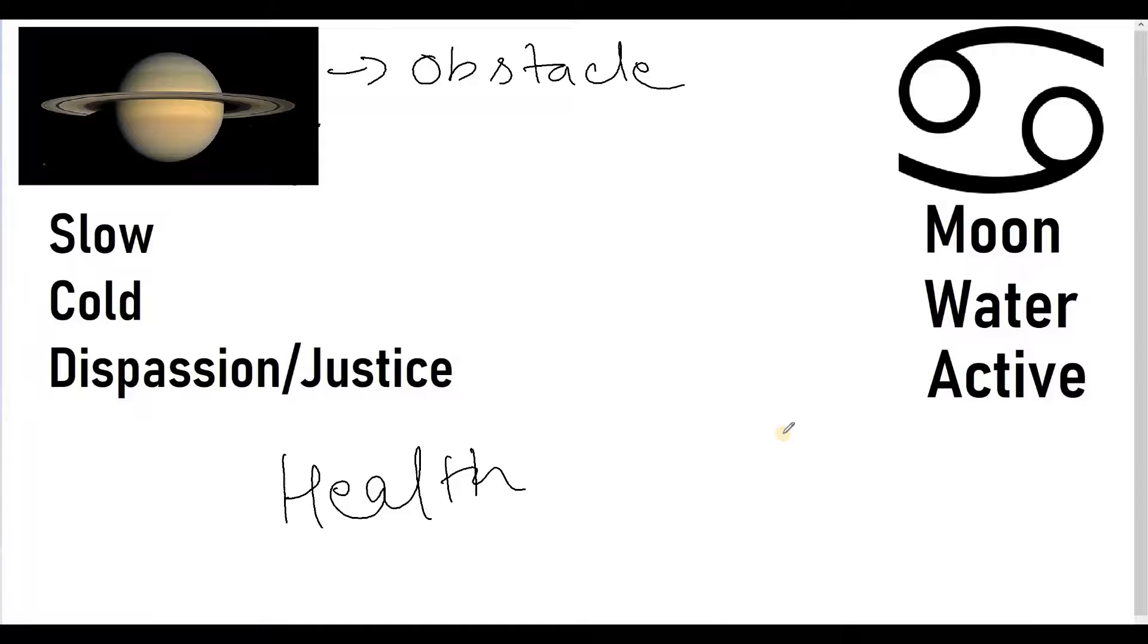So if this placement of Saturn happens to be in Cancer with a weak or afflicted Sun, then heart could be one of the problem areas. And by far one of the best remedies available for this placement is pranayama or breathing exercises. That can relieve a lot of issues of this placement. And I would highly encourage you to see the video about pranayama which I have made earlier.